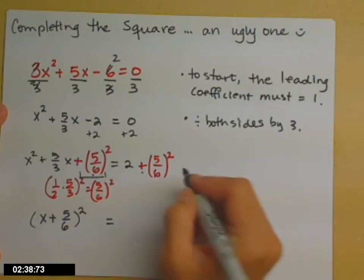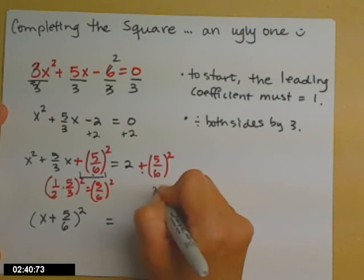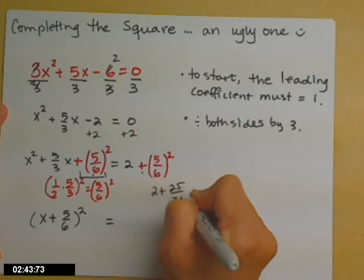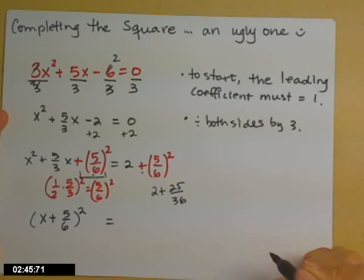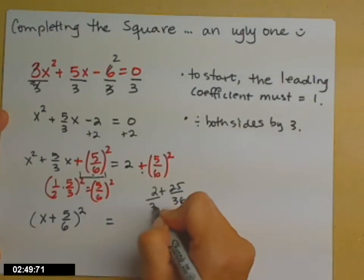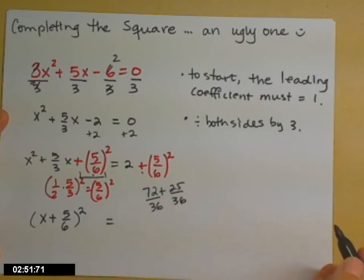On the right-hand side, we have to do a little arithmetic. 2 plus 25 over 36, which means we need a common denominator. So to make this under 36, the top would be a 72. Trust me on that one, so we get 97 over 36.